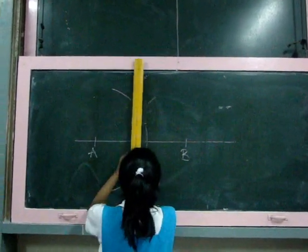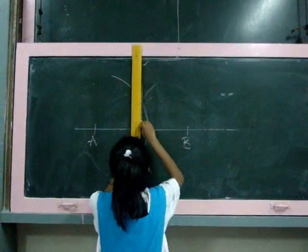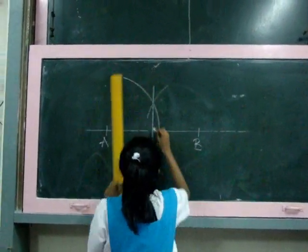Step 3: Join the two intersection points to form a straight line. This line is the perpendicular bisector of AB.